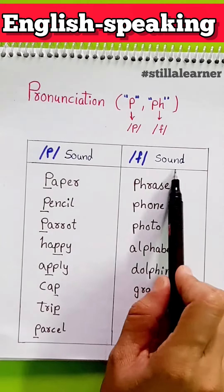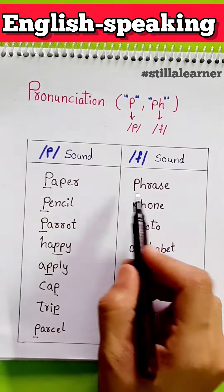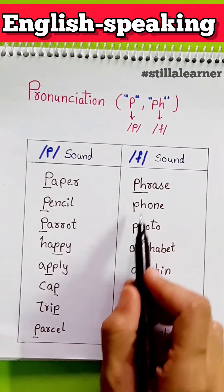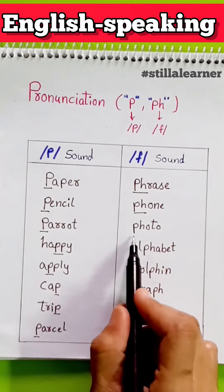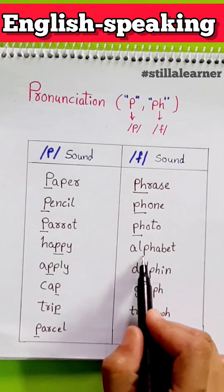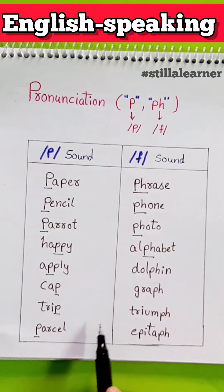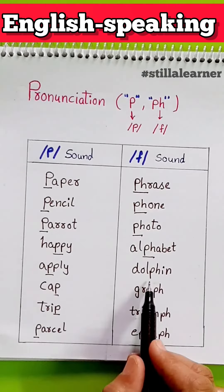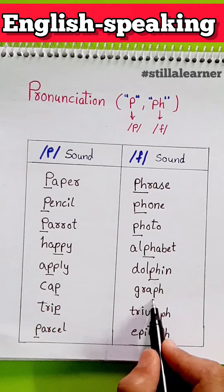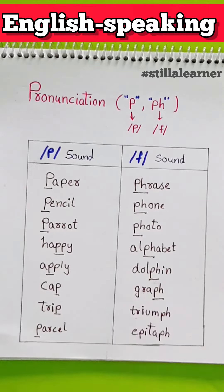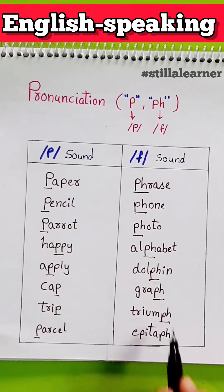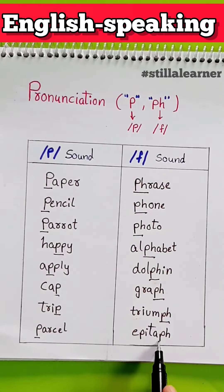So let's move on to the F sounds: phrase, phone, photo, alphabet, dolphin, graph, epitaph.